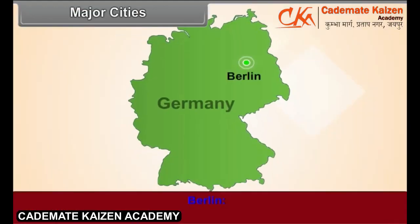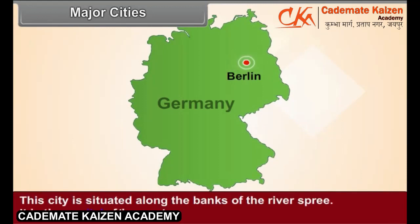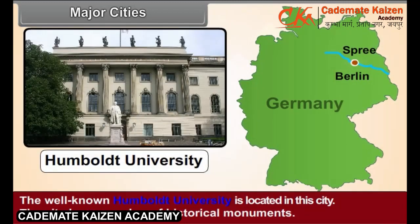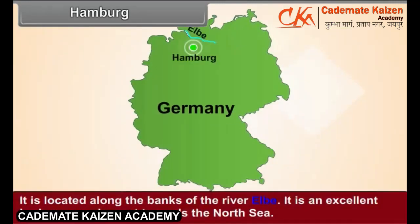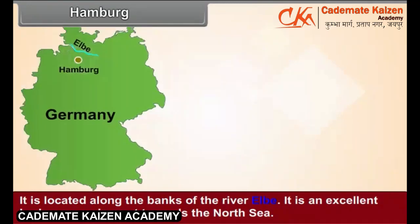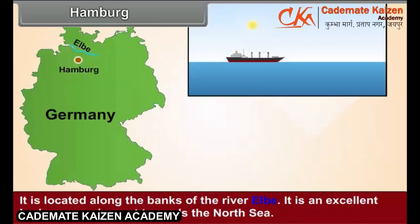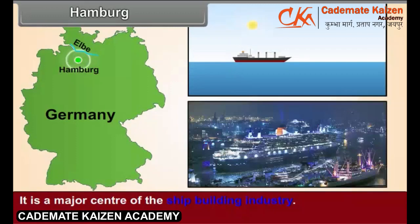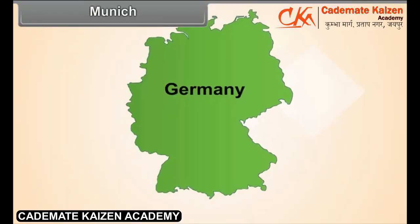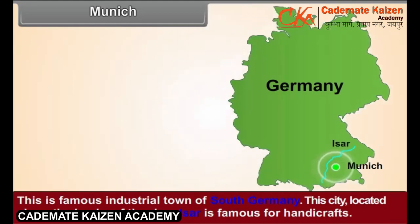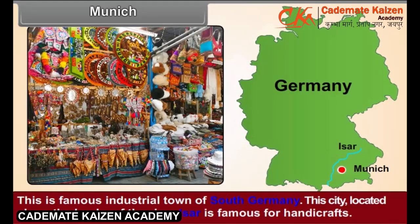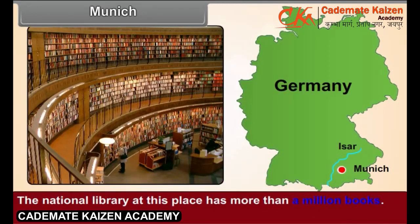Major Cities. Berlin: This city is situated along the banks of the river Spree. It is the capital of the country. The well-known Hamburg University is located in this city. The city has a number of historical monuments. Hamburg: It is located along the banks of the river Elbe. It is an excellent harbor opening out towards the North Sea. It is a major center of the shipbuilding industry. Munich: This is a famous industrial town of South Germany, located along the banks of the river Isar, and is famous for handicrafts. The National Library at this place has more than a million books.